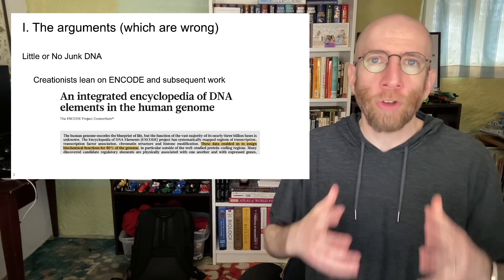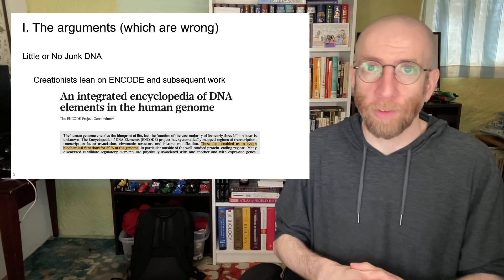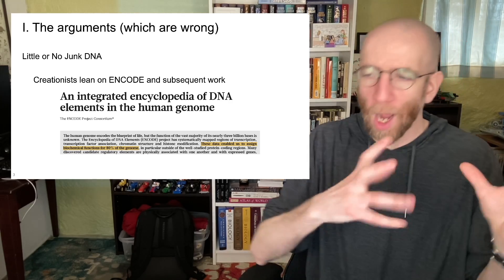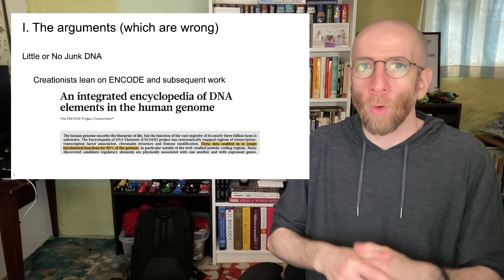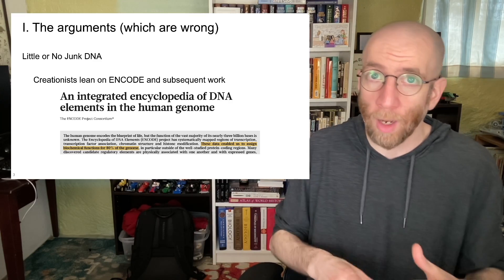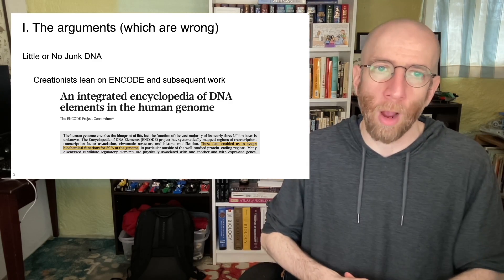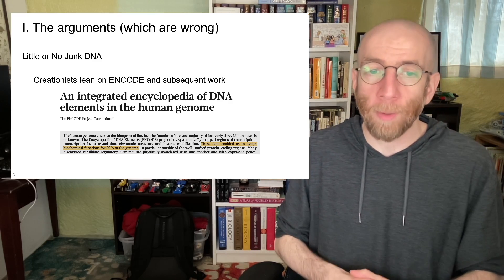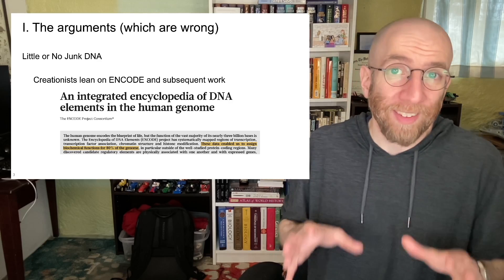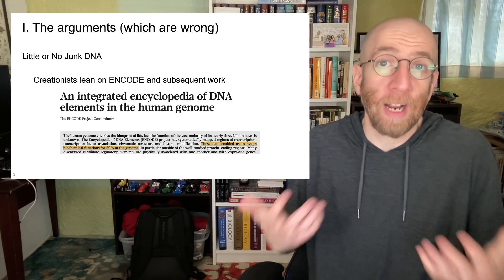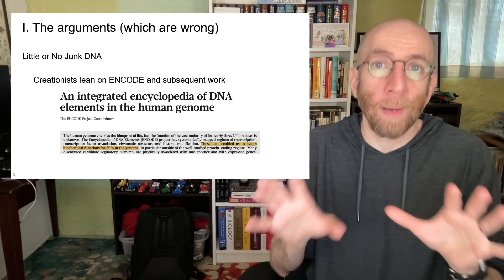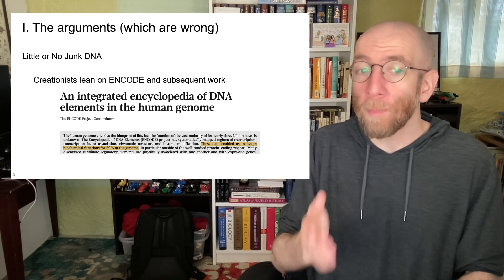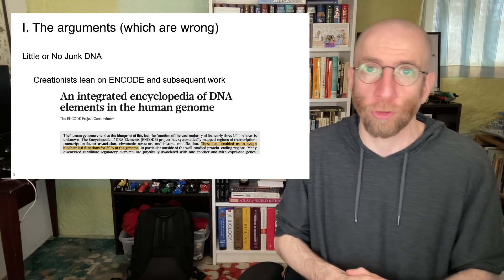The junk DNA argument — really the anti-junk DNA argument — is made by lots of creationists. The data they use comes from the ENCODE project and subsequent work. ENCODE and follow-up projects looked at the human genome, seeing what's there and what it does. The ENCODE project made news in 2012 with the paper An Integrated Encyclopedia of DNA Elements in the Human Genome. It turns out that paper's claims aren't actually true, but it was a big headline-grabbing finding, and to some extent still is even 12 years later. Some members of the ENCODE project even went further, with one member saying he expects 80% to go to 100% functionality within the human genome.